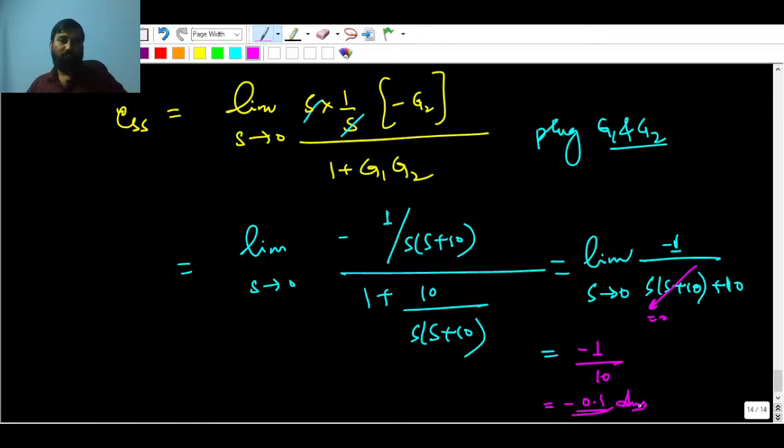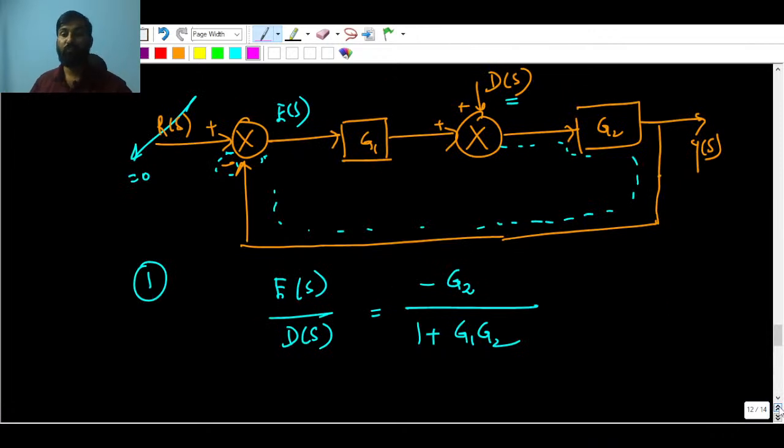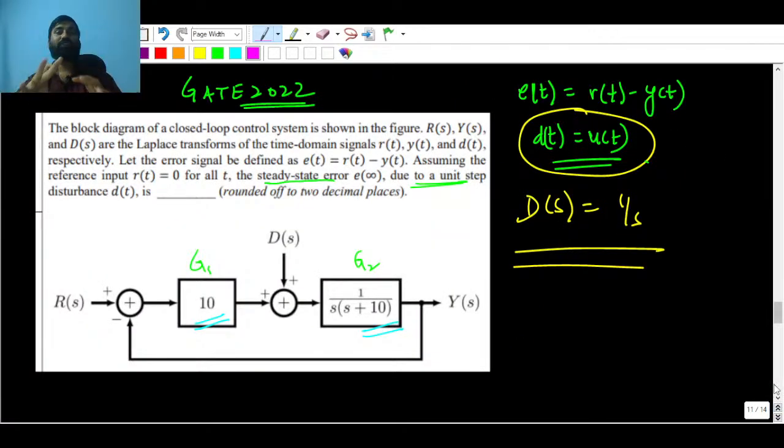This question can be done within only 30 seconds because there is some calculation. I hope this question is understood, how to solve this question. That is the motivation. Suppose this question is in front of you, so you have to read it. They are supposed to ask steady state error due to step input. Great. Answer. So answer for this question is -0.1. Do not forget minus, otherwise you will get 2 marks.